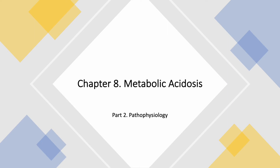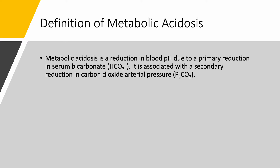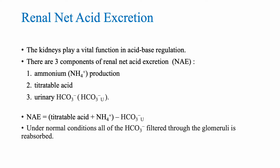We are still on Chapter 8, Metabolic Acidosis. Today we are going to start our discussion of pathophysiology of metabolic acidosis. Metabolic acidosis is a reduction in blood pH due to a primary reduction in serum bicarbonate. Therefore, we have an associated compensatory decrease in arterial carbon dioxide pressure.